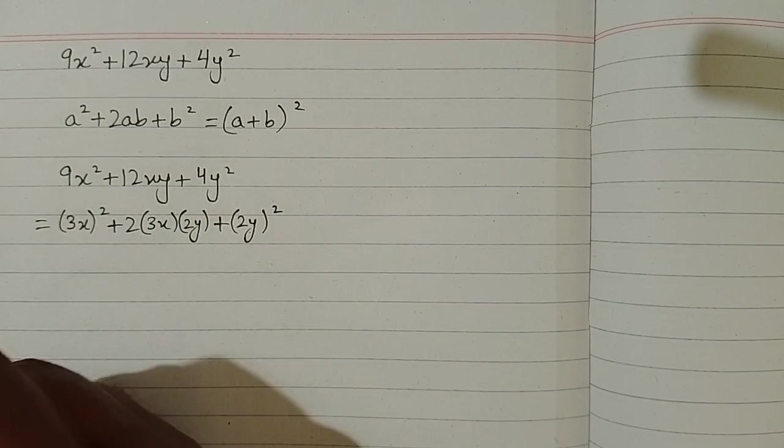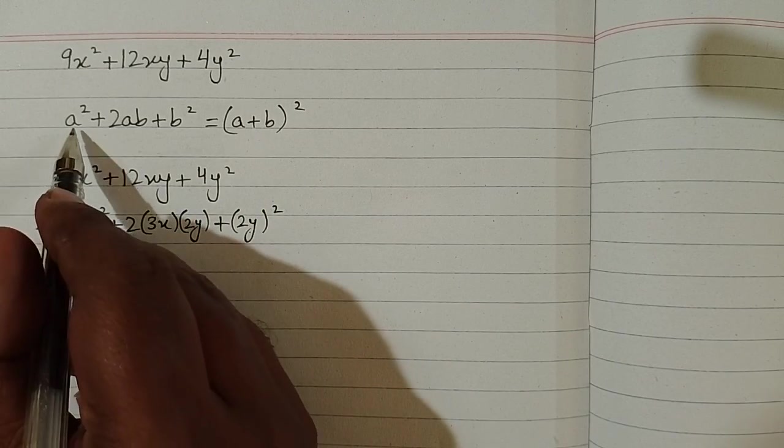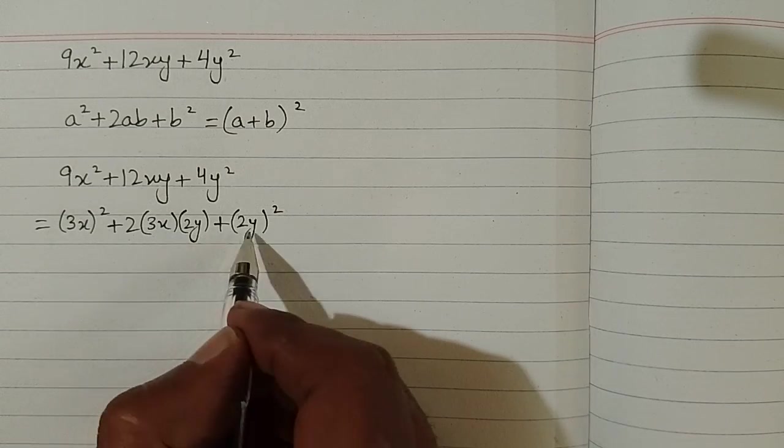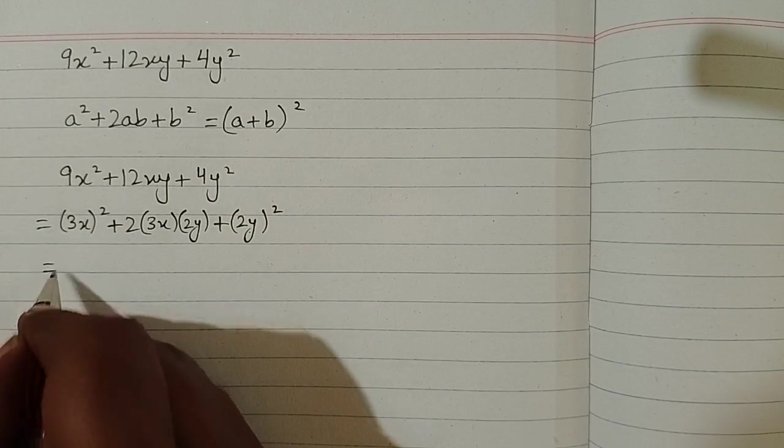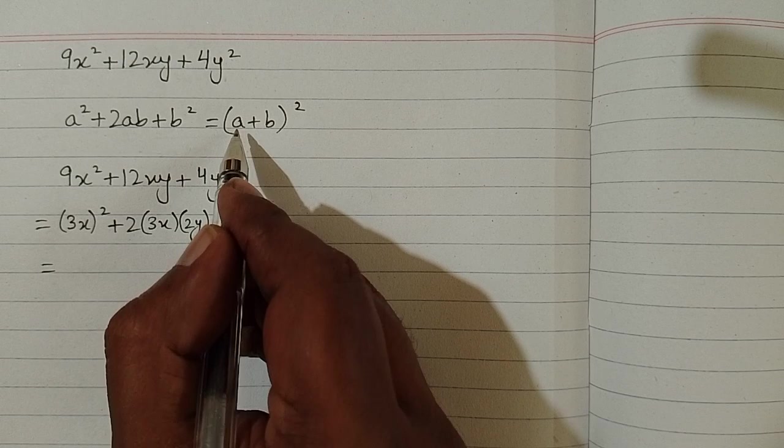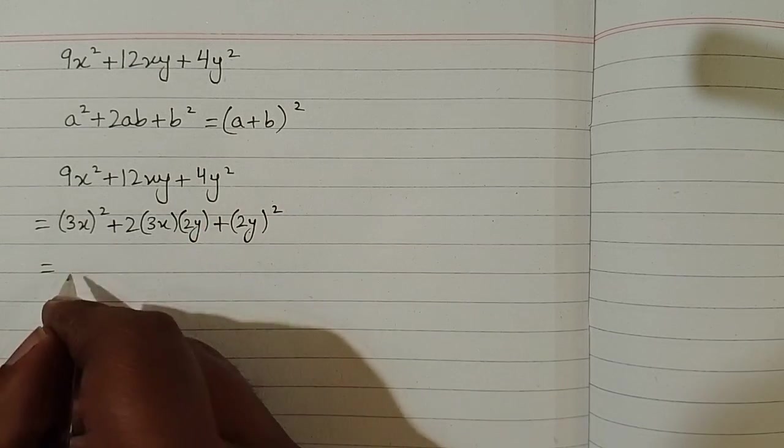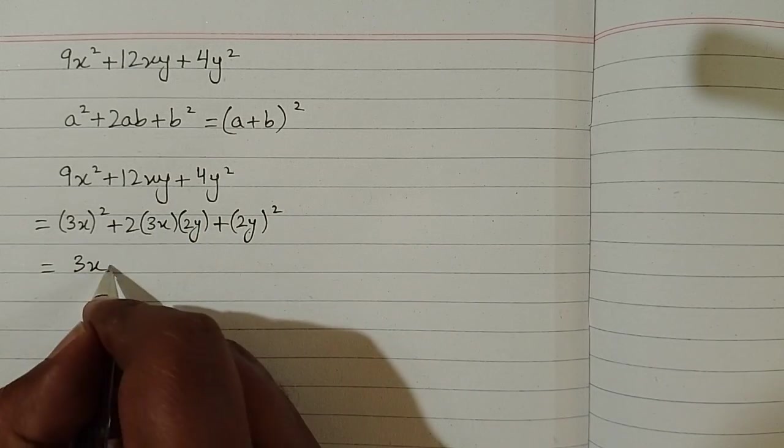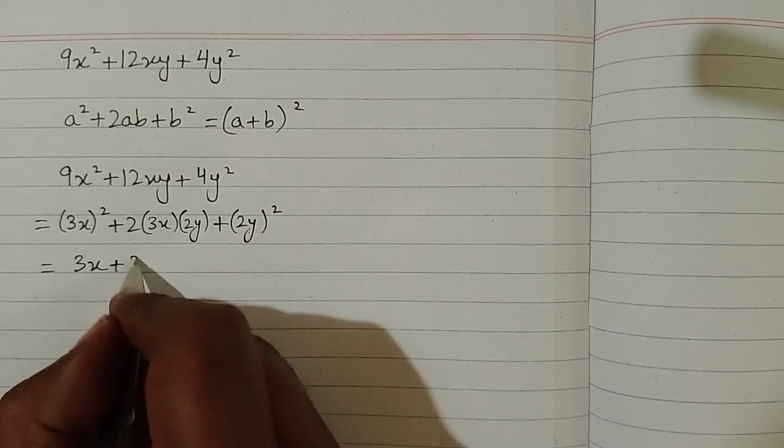Now we can apply this formula and we have 3x in place of a and 2y in place of b. So we can write 3x over here in place of a then plus and in place of b we can write 2y.